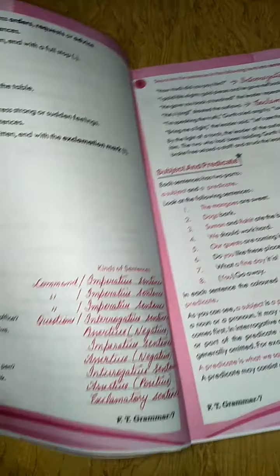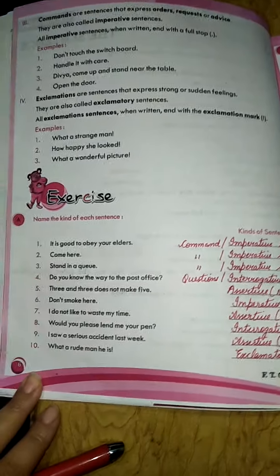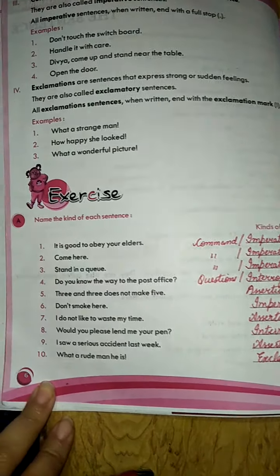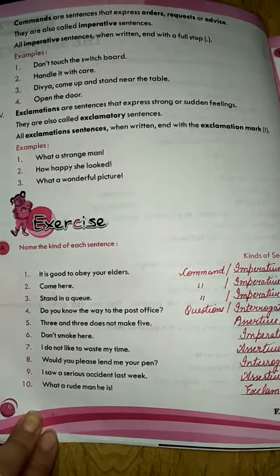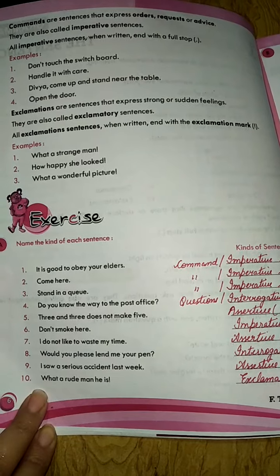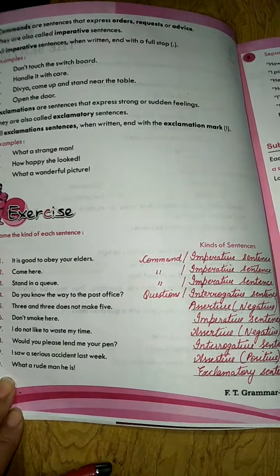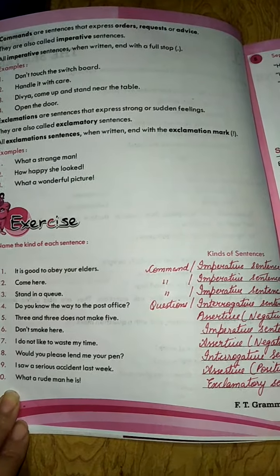Now all the exercises I have already done for you. Exercise number A is name the kind of each sentence. Here are 10 sentences.